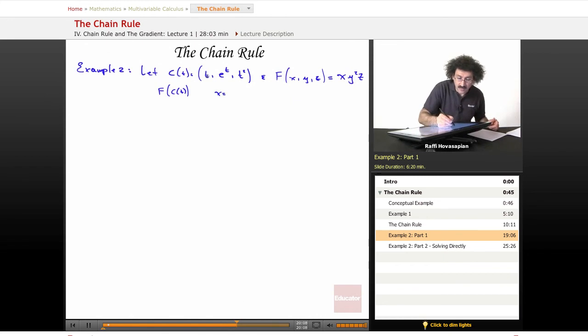x is this thing, T. Y is this thing, e^t. It's the second component. And z is this, t^2. Let's want to write everything out.